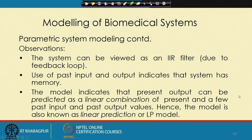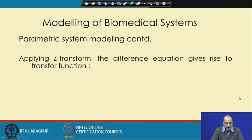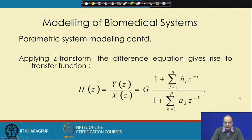The model indicates that the output is a linear combination of the present and a few past outputs. Because it is a linear combination of the present input, past inputs, and past outputs, we can call this a linear prediction model, or in short, an LP model.